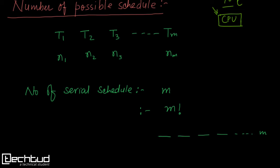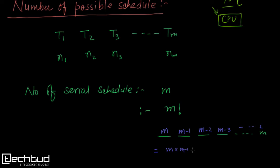Continuing the permutation: m × (m−1) × (m−2) × ... × 1 = m factorial. So the total number of serial schedules is m!.